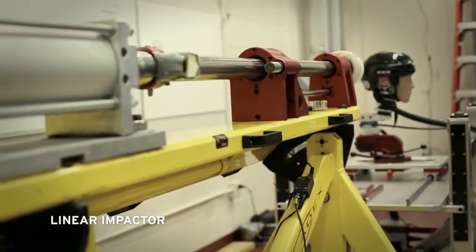My name is Clara Cardin. I work here at the Neurotrauma Impact Science Lab at the University of Ottawa. I'm going to talk a little bit about this piece of machinery here which we call the linear impactor.